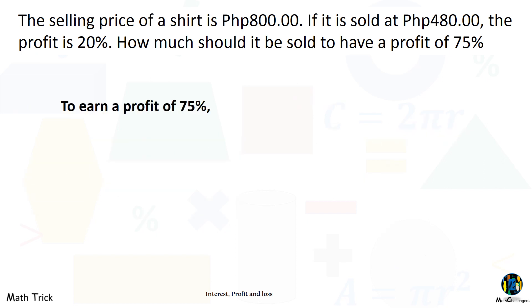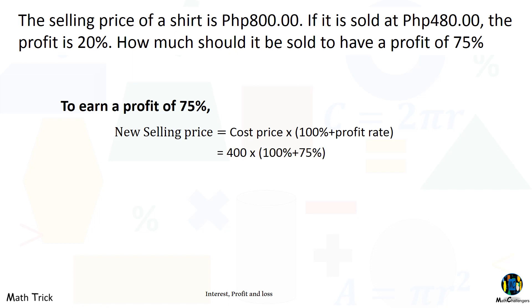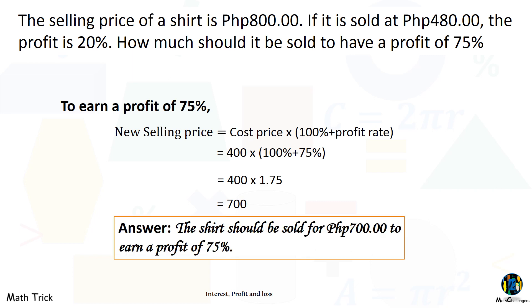The new selling price with 75% profit can be computed by multiplying the cost by the sum of 100% and the intended profit rate: 400 times the sum of 100% and 75%. 400 times 1.75 is 700. The shirt should be sold for 700 pesos to earn a profit of 75%.